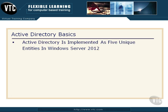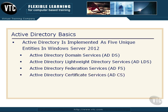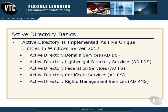Active Directory, when it first came out in Windows 2000, was one huge service, and it was somewhat complex and intimidating to work with. Now, in Windows Server 2012, Active Directory is implemented as five unique entities: Active Directory Domain Services (ADDS), Active Directory Lightweight Directory Services (ADLDS), Active Directory Federation Services (ADFS), Active Directory Certificate Services (ADCS), and Active Directory Rights Management Services (ADRMS).